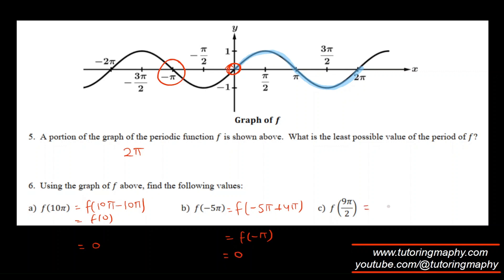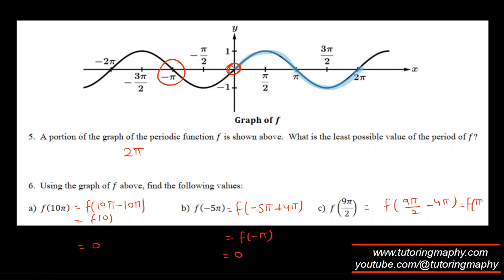For f of 9π over 2: since 9π/2 is 4.5π, subtract 4π to get f of π over 2. And f of π over 2 is right here, which is 1.